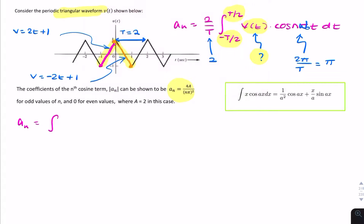So from minus 1 to 0, 2t plus 1, cosine n pi t dt, plus integration from 0 to 1, minus 2t plus 1, cosine n pi t dt.